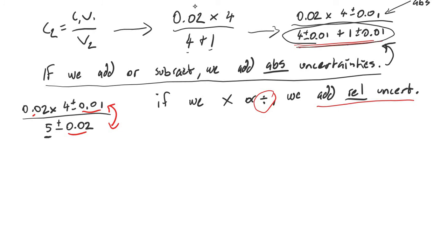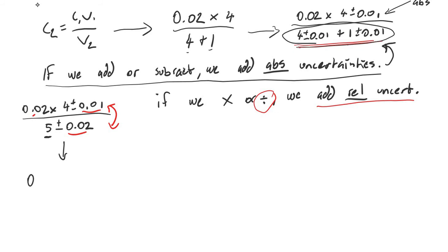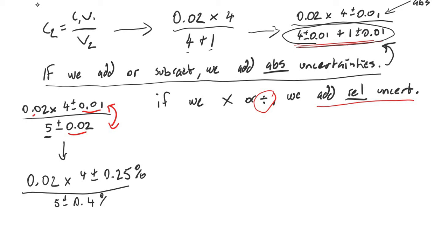We need to change those from absolute uncertainty to relative, which will look like: 0.02 multiplied by 4, plus or minus 0.25 percent, divided by 5, plus or minus 0.4 percent. Now we've got our relatives — we can do the calculation and add up our relative uncertainties. Finally, concentration 2 is equal to 0.016 plus or minus 0.65 percent.